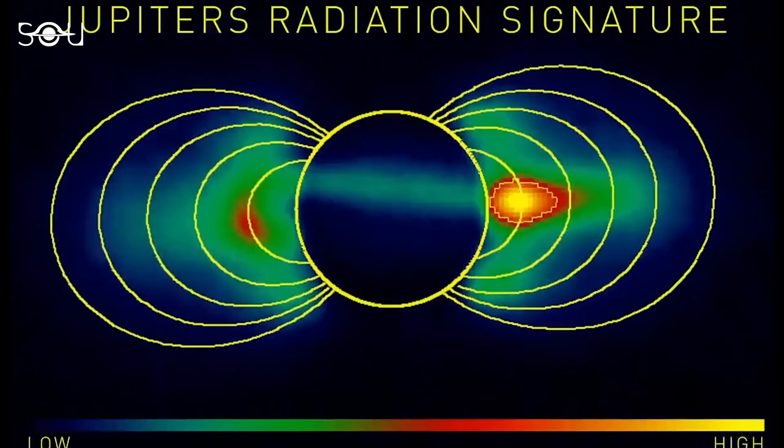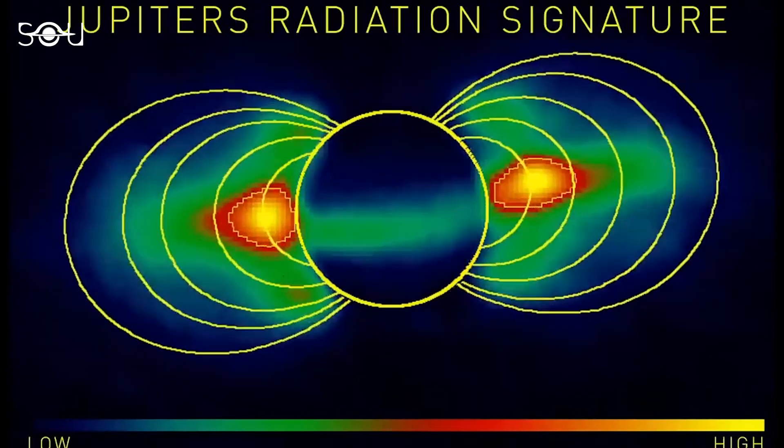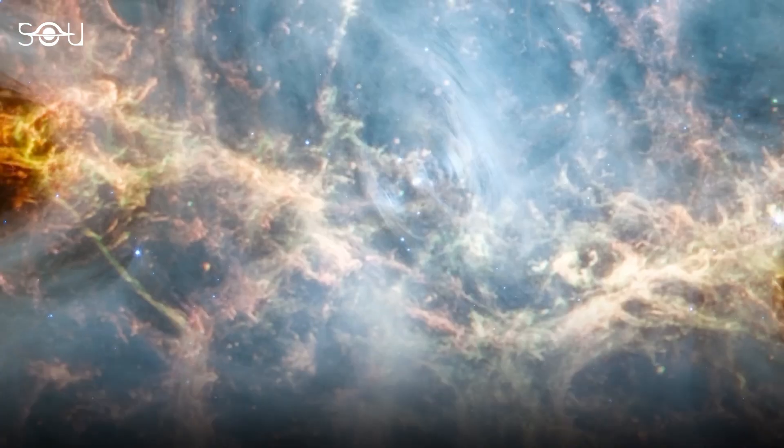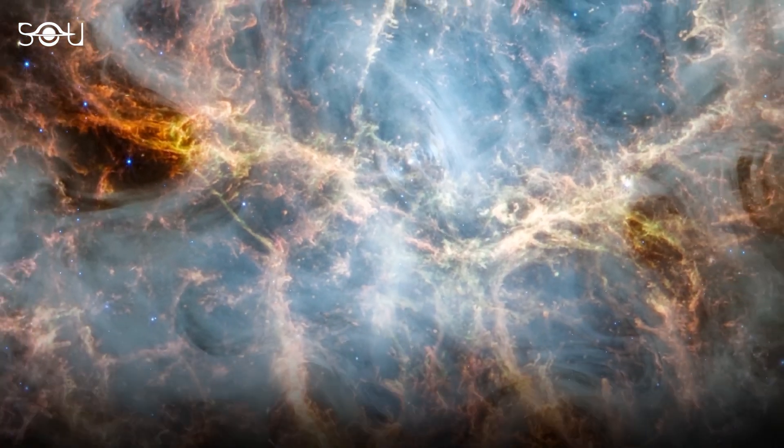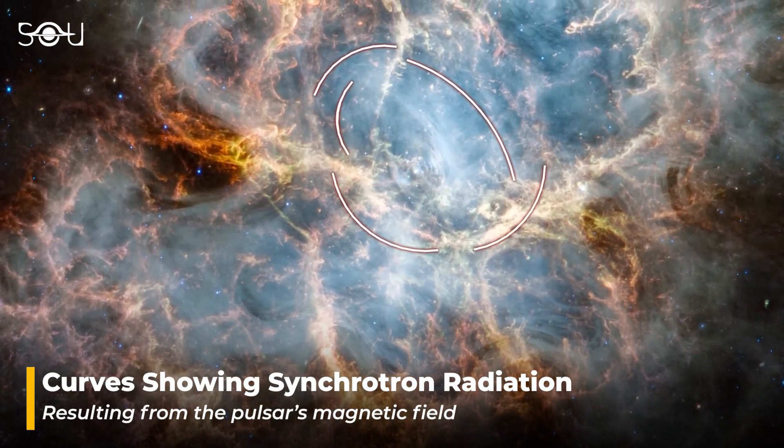This acceleration causes the particles to emit light across the broad spectrum from radio waves to x-rays. In the JWST image, this appears as a milky, smoke-like material throughout most of the Crab Nebula's interior.